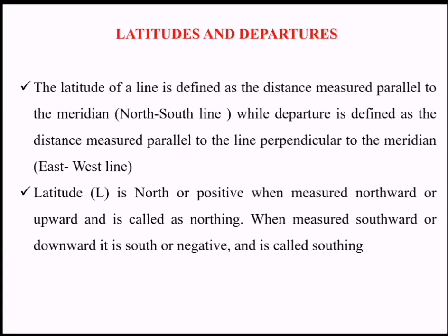The latitude of a line is defined as the distance measured parallel to the meridian, that is the north-south line. Departure is defined as the distance measured parallel to the line perpendicular to the meridian, that is the east-west line.